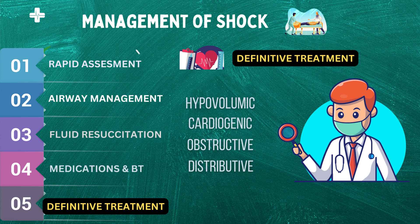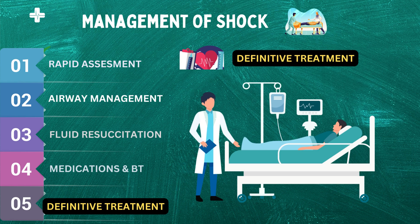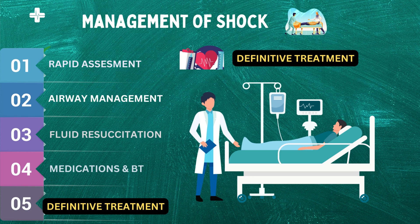It's important to note that definitive treatment for the underlying cause of shock may not always be possible in all cases. For example, in cases of irreversible brain damage, definitive treatment may not be an option. In these cases, healthcare professionals will focus on providing comfort measures and palliative care to ensure the patient's comfort and dignity.